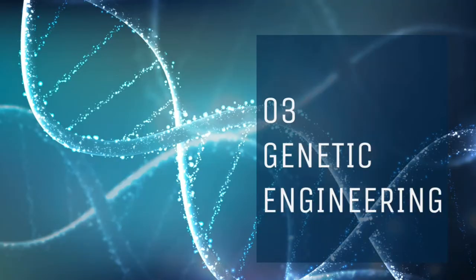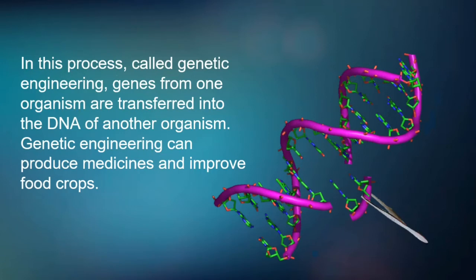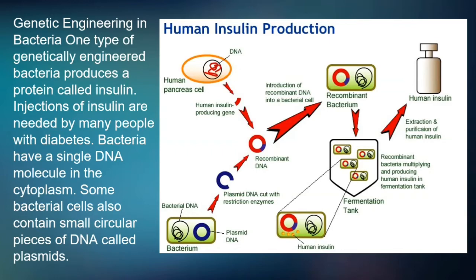Genetic engineering. In this process called genetic engineering, genes from one organism are transferred into the DNA of another organism. Genetic engineering can produce medicines and improve food crops. One type of genetically engineered bacteria produces a protein called insulin. Injections of insulin are needed by many people with diabetes. Bacteria have a single DNA molecule in the cytoplasm, and some bacteria cells also contain small circular pieces of DNA called plasmids. Basically, they inject plasmid DNA into the bacterium DNA, and with this process they can produce human insulin.